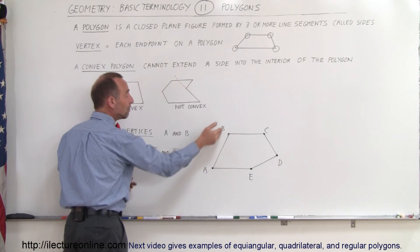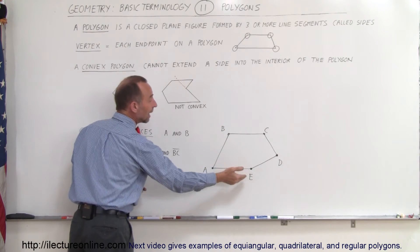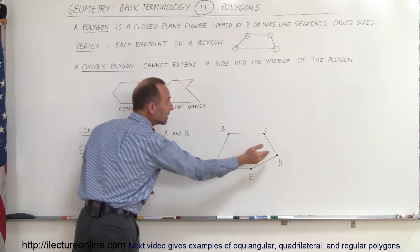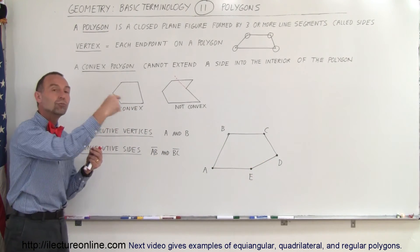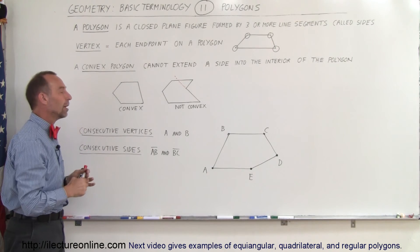Just as the line segment AB is consecutive to AE, and AE is consecutive to ED, and so forth. So it's the next line segment as you move along the sides of the polygon.